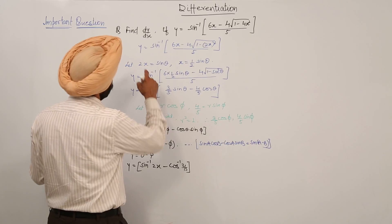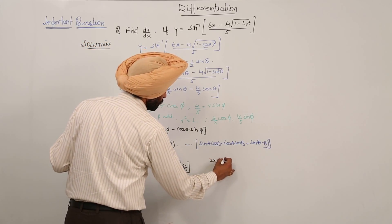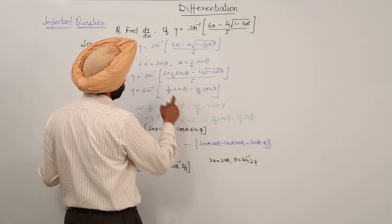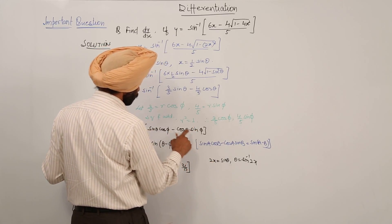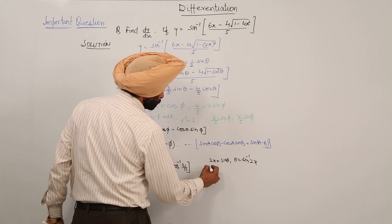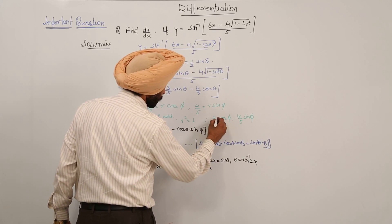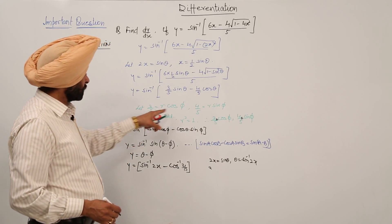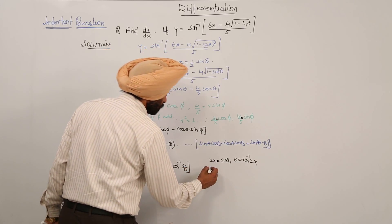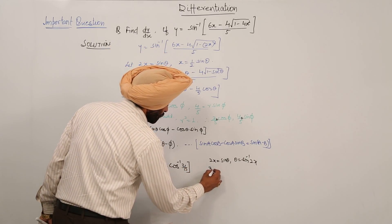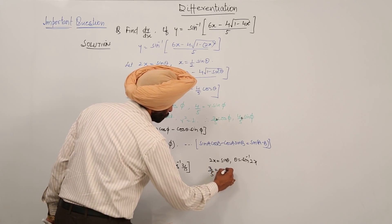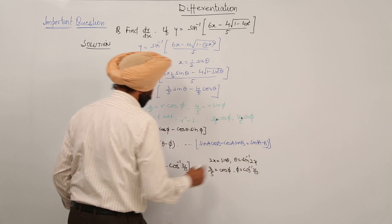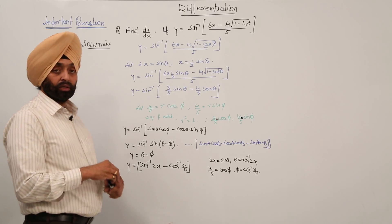When 2x equals sin θ, then θ equals sin inverse (2x). And since 3/5 equals cos φ, therefore φ equals cos inverse (3/5). So y equals sin inverse (2x) minus cos inverse (3/5).